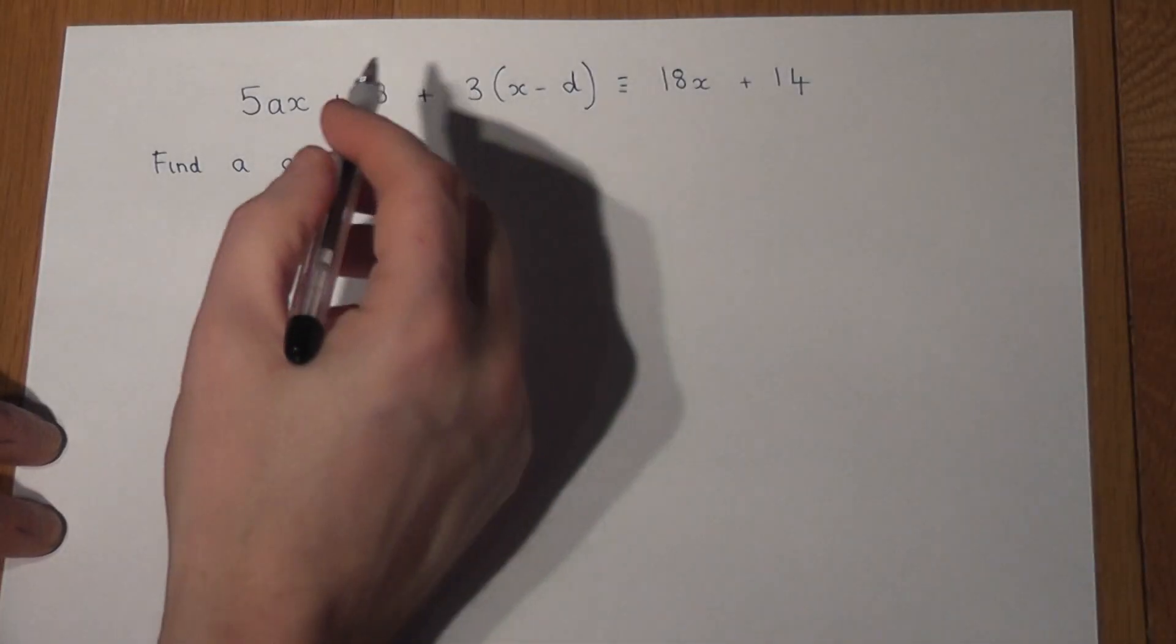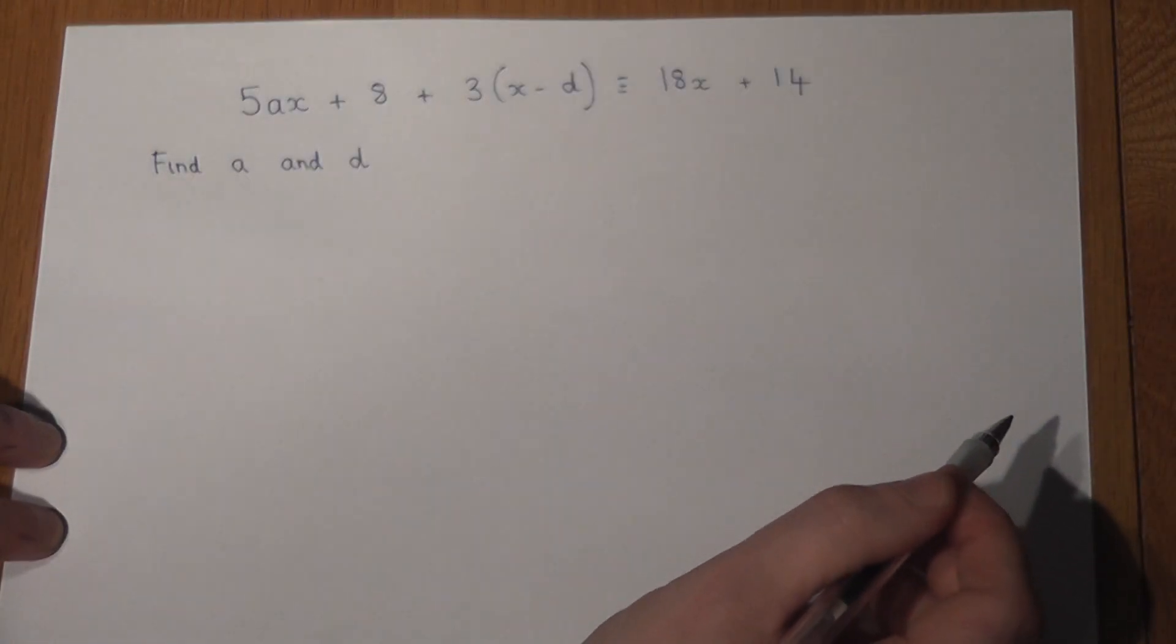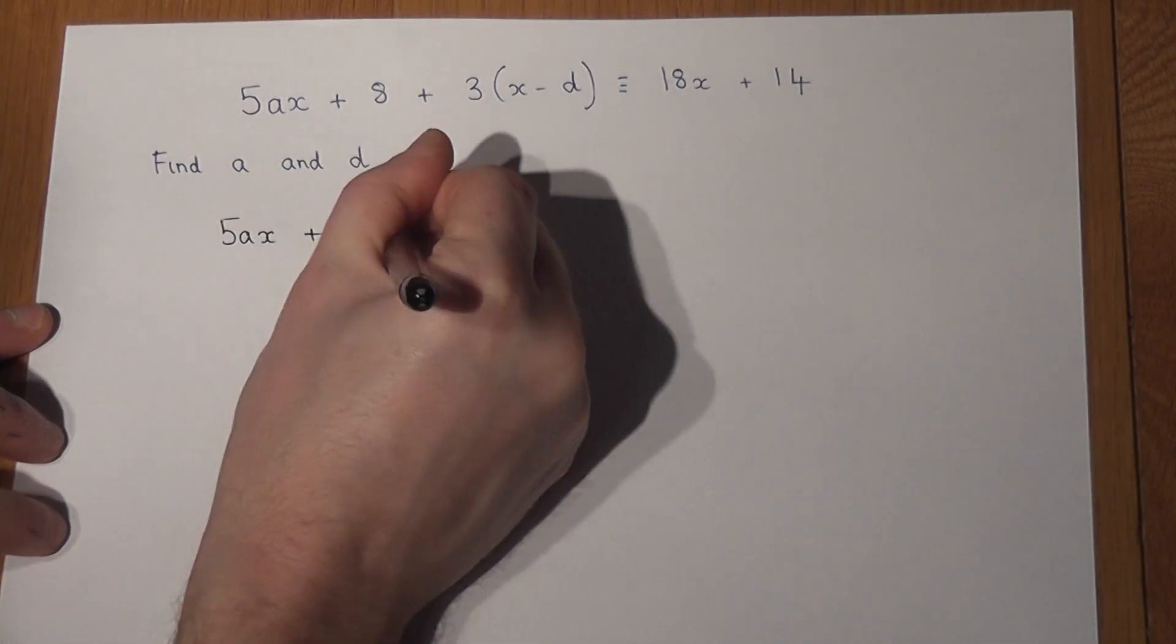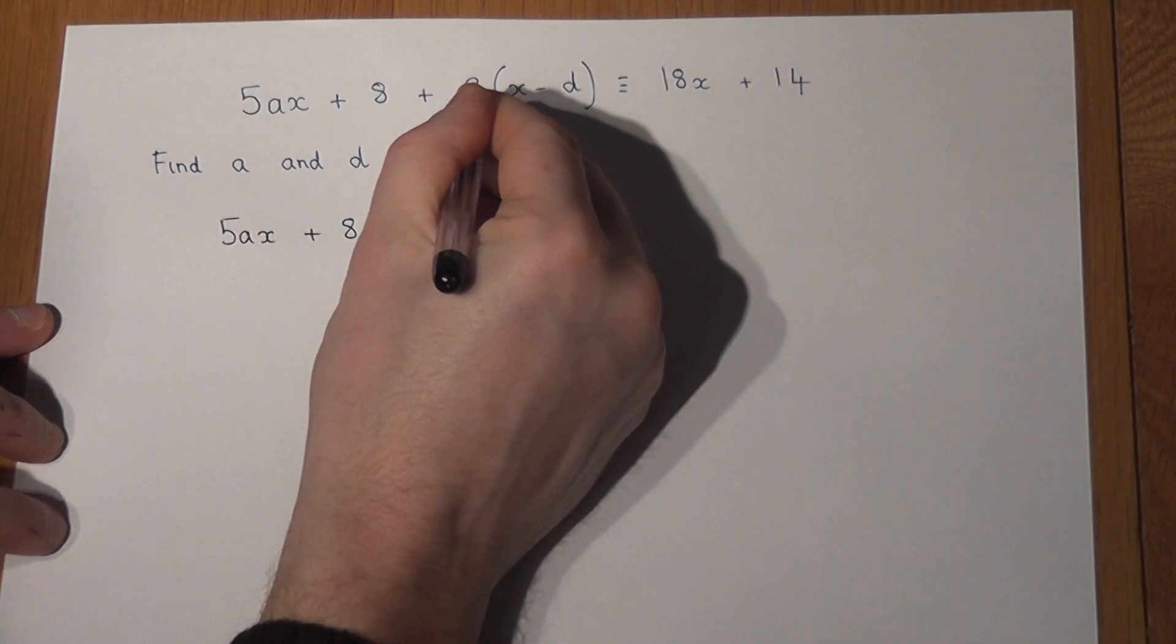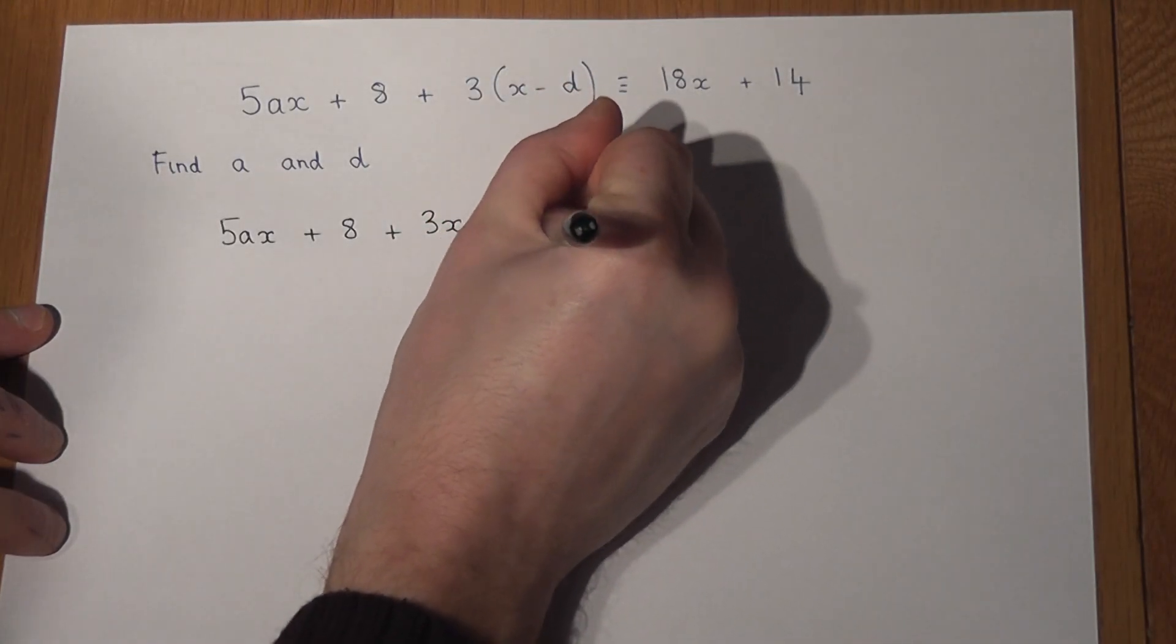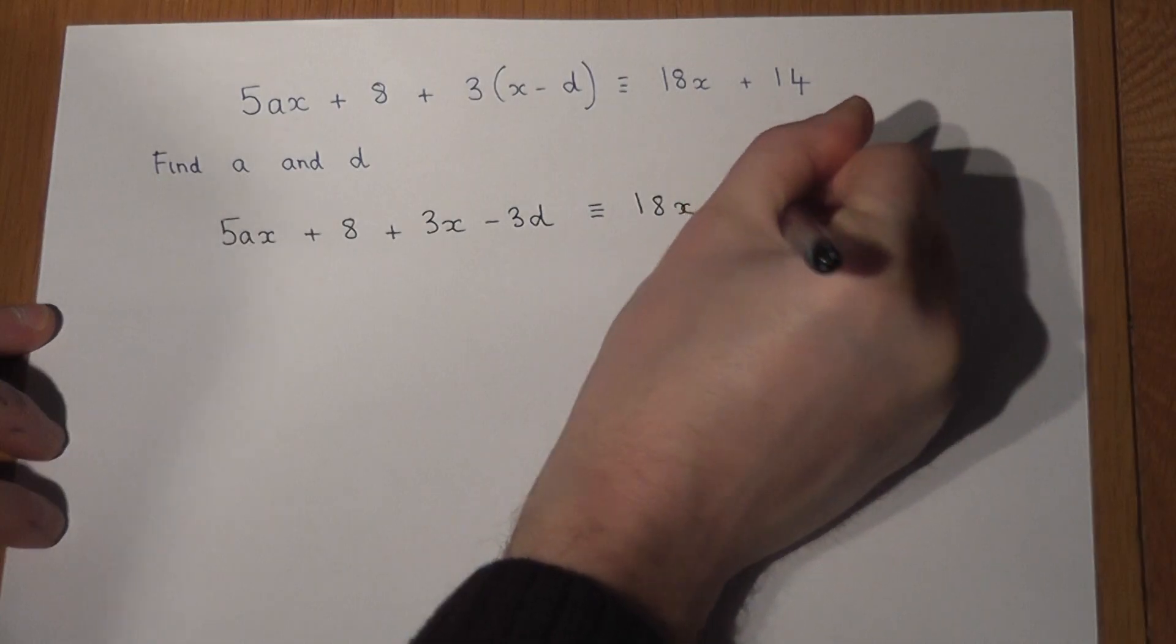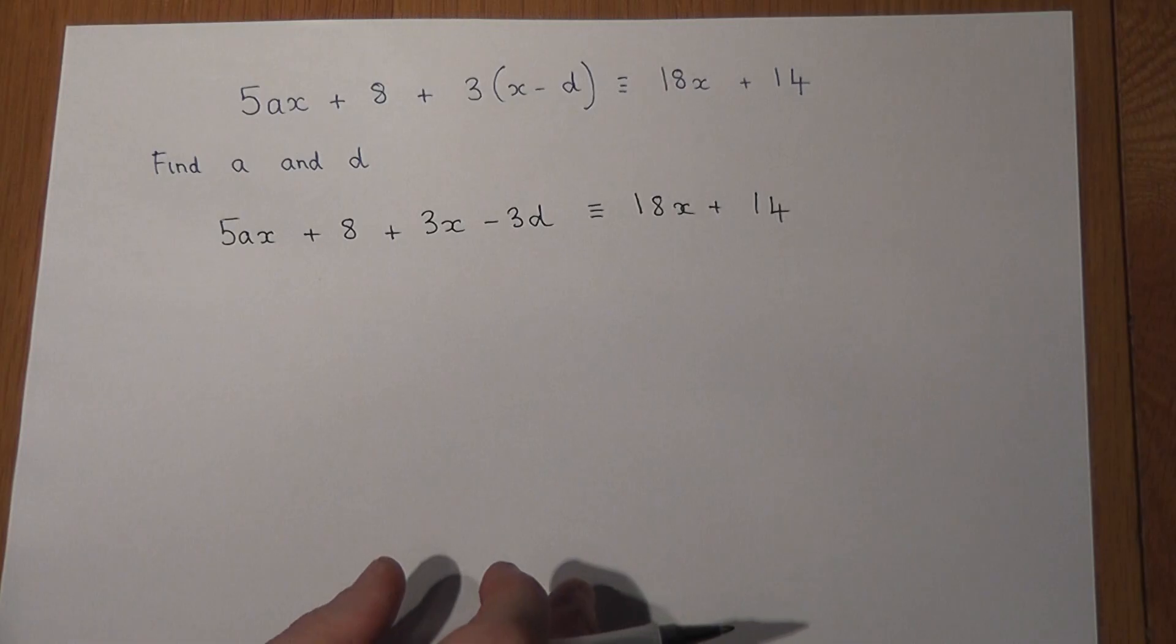Now my advice is, given this, to actually expand the left hand side where possible. So I've got 5ax and I've got 8. Now 3 times x is 3x, and 3 times minus d is minus 3d. The right hand side is 18x plus 14, and again these three lines mean that both sides need to be identical.